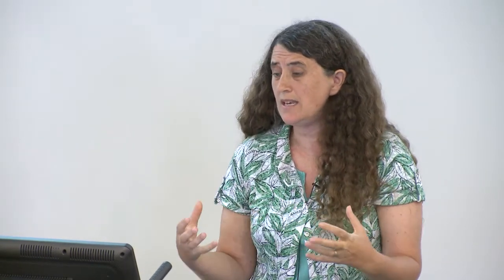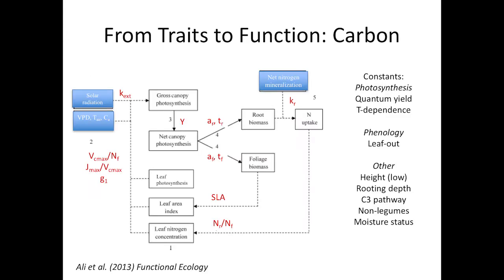That's a little different from how most people work with traits, which is often to take an ecosystem average across species. So I've ended up with a working definition: a trait is a measurable something that characterises a species and can be used as a model input parameter — while being aware of the sources of variation in that trait.